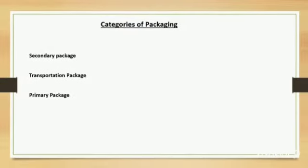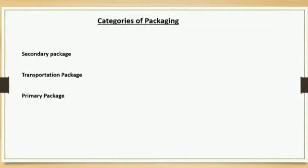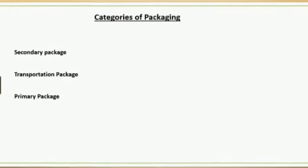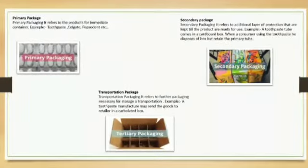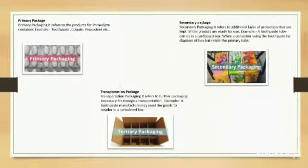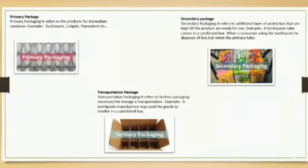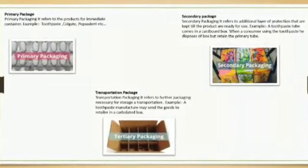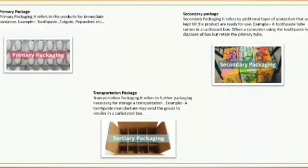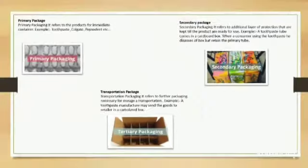We have three categories of packaging. The first is primary packaging, the second is secondary packaging, and the third is transportation packaging. Primary packaging refers to the product's immediate container — for example, a toothpaste tube such as Colgate or Oral-B.